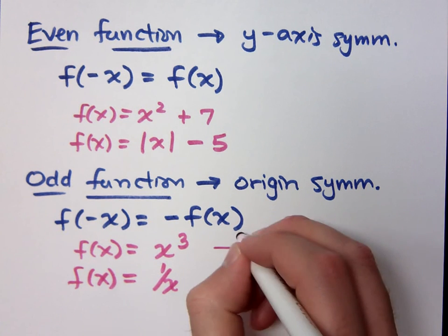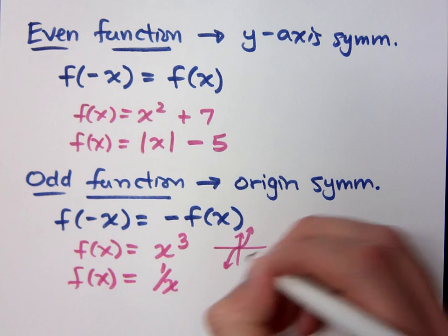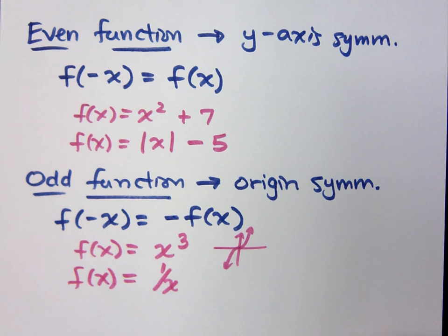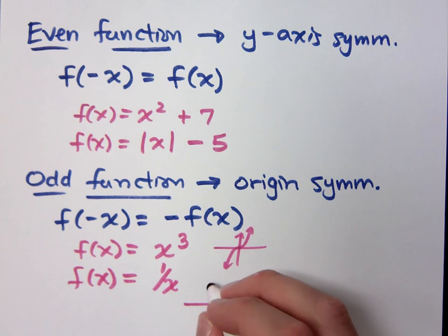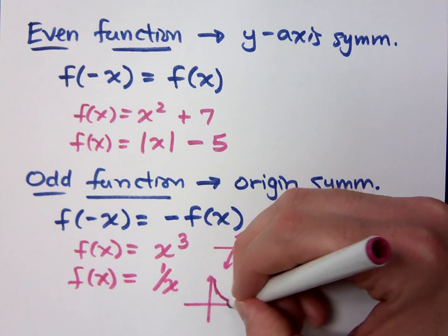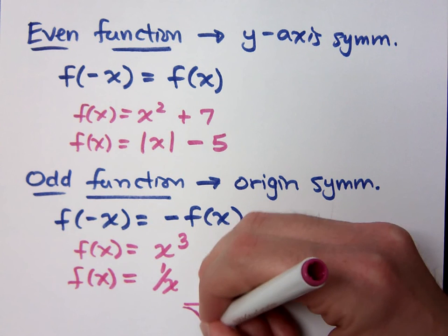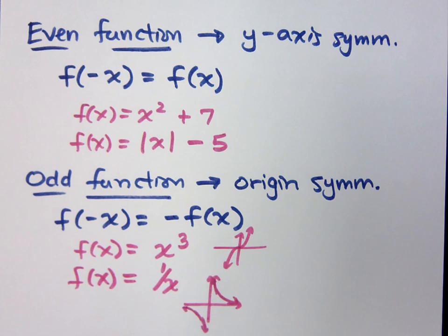If I look at x cubed, it has origin symmetry. And 1 over x — the reciprocal function — has a graph that, if you rotate it 180 degrees, looks the same. The reciprocal function is what we're going to be talking about a little bit later.